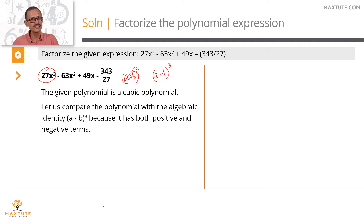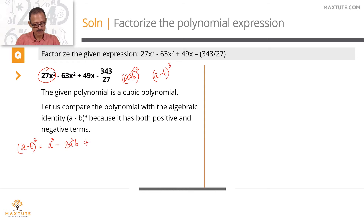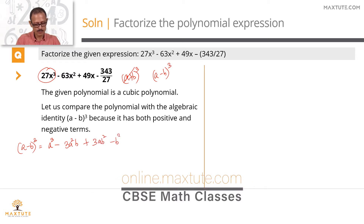Let's check out whether it makes sense with (a-b)³. So what's the starting point? Find the expansion of this identity. (a-b)³ = a³ - 3a²b + 3ab² - b³.